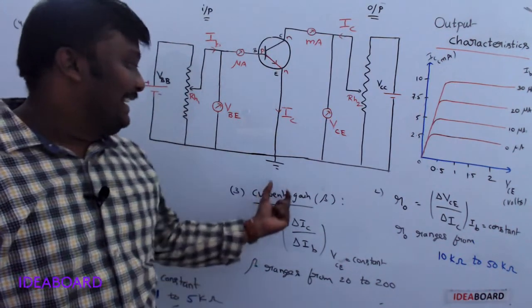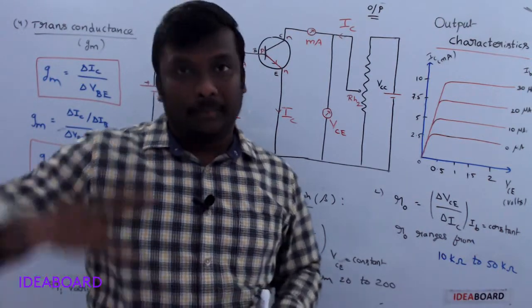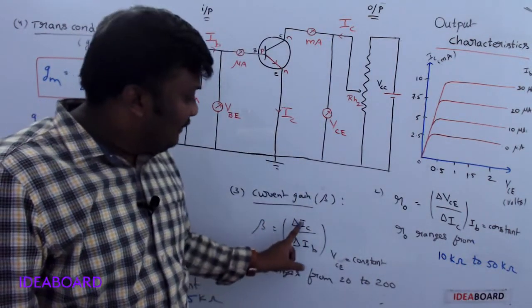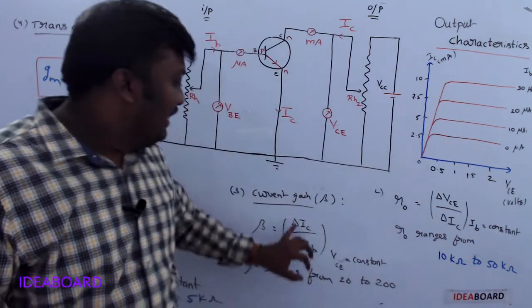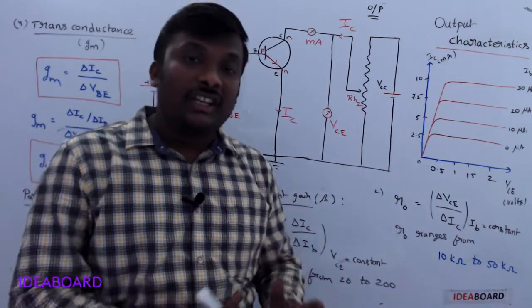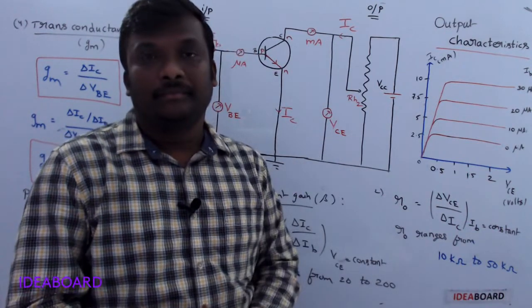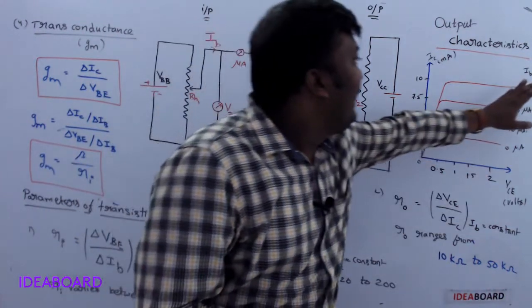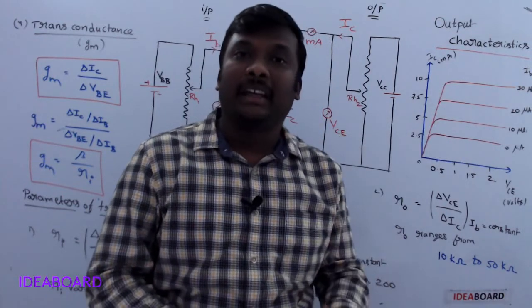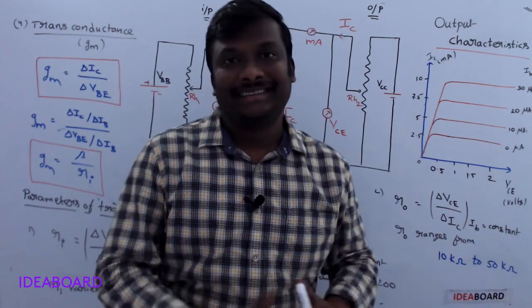Transconductance is the fourth parameter of the transistor. Regarding current gain: β_AC = ΔIC/ΔIB (for changes) and β_DC = IC/IB (direct values). Both β_AC and β_DC values are nearly equal, because IB and IC values change proportionately. That completes the discussion of transistor characteristics and their important parameters.